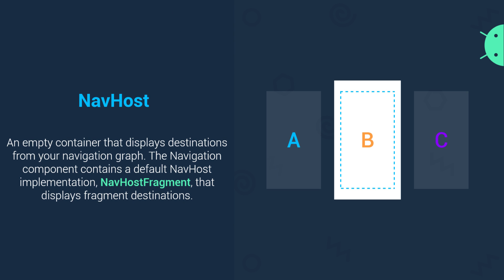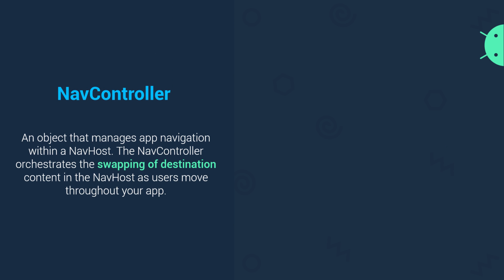Next is NavHost. NavHost is an empty container that displays destinations from your Navigation Graph. Navigation Component contains a default NavHost implementation named NavHostFragment that displays fragment destinations. A destination is basically a fragment or activity. For this tutorial we're going to use fragments, and NavHost will contain all our fragments.